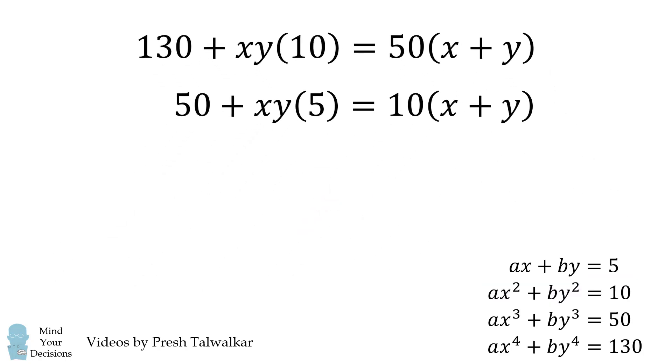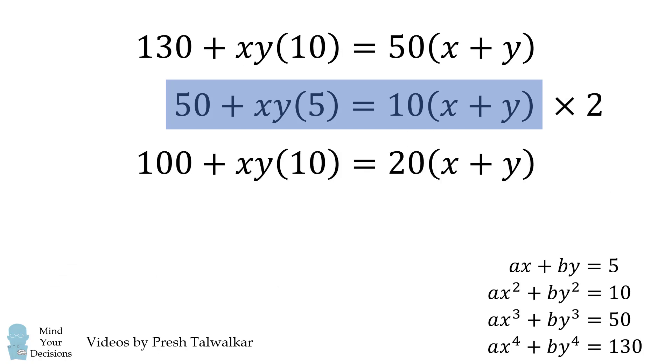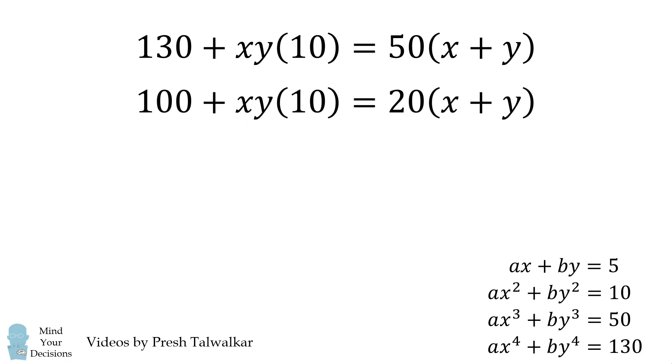We now consider these two equations. We'll multiply this second equation by 2, so that the factor on xy is equal to 10. We now subtract the second equation, and we'll eliminate the entire xy factor from both equations. We get 30 is equal to 30 multiplied by the quantity x plus y. We can then solve that x plus y is equal to 1.